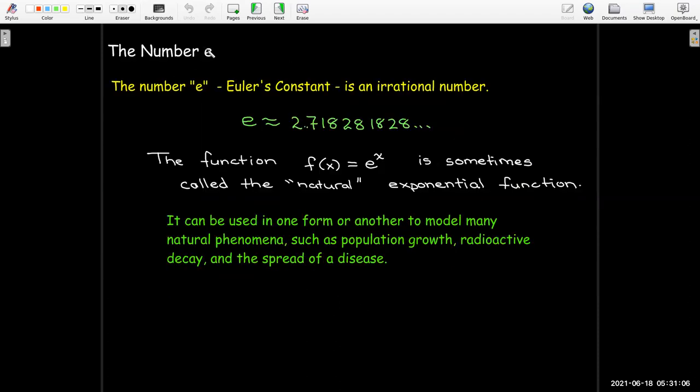The number e is going to play an important role in the entire course, but for now, we're not even going to define it. We're just going to say it's an irrational number, which means I can't write down its exact value as a decimal. It has the approximate value of 2.718281828. If I use that as my base, this f of x, which is e to the power of x, is sometimes called the natural exponential function. It's called the natural exponential function because in one way or another, it appears in mathematical models for many natural phenomena, such as population growth, radioactive decay, and the spread of disease.